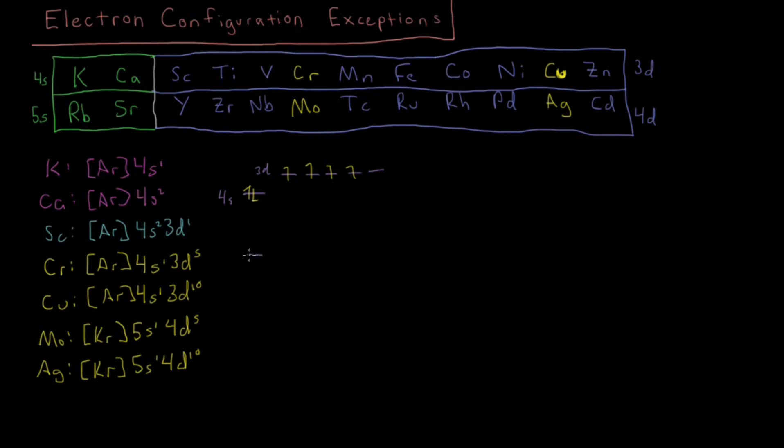But that doesn't actually happen, and instead we get a configuration for 3D, 4S where we have something like the following, where we have 1, 2, 3, 4, 5. Our 6 electrons are 4S1 and 3D5. So the explanation that's generally given in general chemistry about this for why this is the case is that they say half-filled subshells are exceptionally stable.